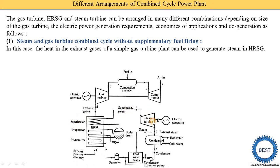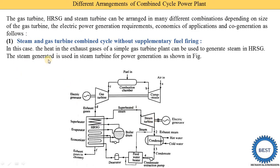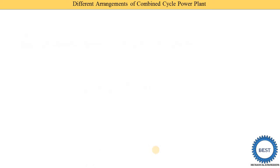The steam generated is used in a steam turbine for power generation. In the steam turbine, mechanical energy is produced, which is supplied to the generator. The generator converts mechanical energy into electrical energy. The same process is carried out as in a standard steam power plant. This completes the first arrangement.